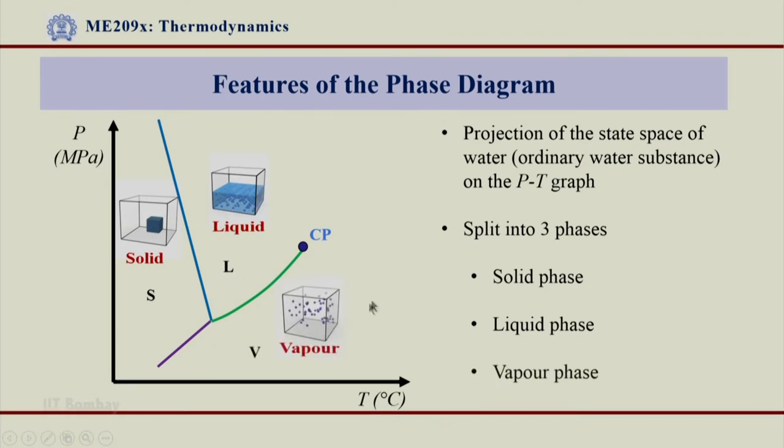And what we have is a vapor region here on this side. So, what we have is SLV, three different phases in these three different regions made because of this crooked Y.